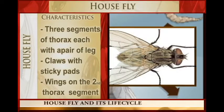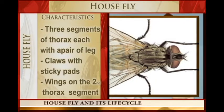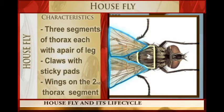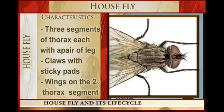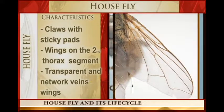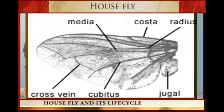When it comes to the wings, the wings are on the second thoracic segment — that is where we find the house fly wings. The wings are transparent and they have a network of veins. You can see through the wings, and it is a network type of veins.